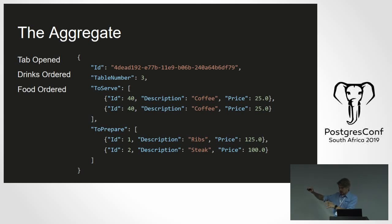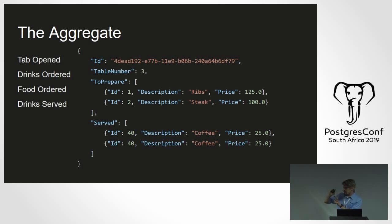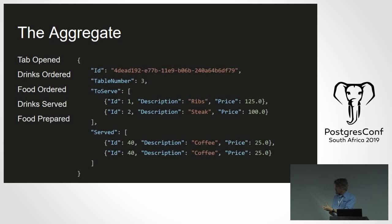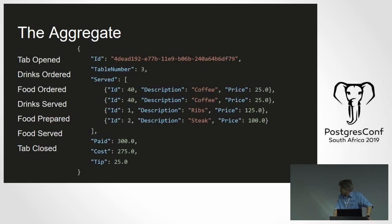Everything has to do with the tab — the interactions and events that apply to it. The aggregate is never really static. It evolves: when the tab is opened, all we know is the table number; as you order drinks and food, items get added; the wait staff serves drinks, the chef prepares food. The aggregate never has a fixed form — it's an evolving entity that takes shape as you apply events to it.